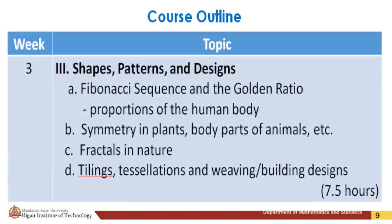The third topic is Shapes, Patterns and Designs, covering: (a) Fibonacci sequence and golden ratio; (b) proportions of the human body, symmetry in plants, body parts of animals, etc.; (c) fractals in nature; and (d) tilings, tessellations and weaving, and building designs. Learning resources include online available videos, books on shapes, patterns and design, the natural environment, online lecture notes, and architectural, interior design, and woven products. Assessment will be based on projects and assignments.